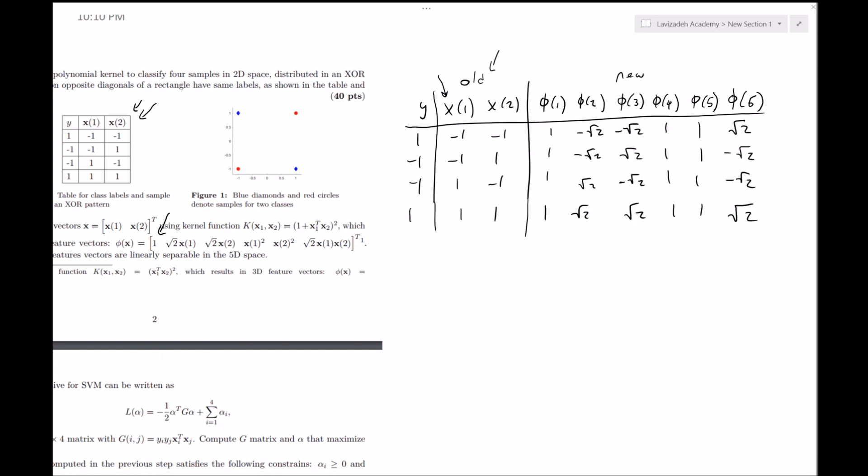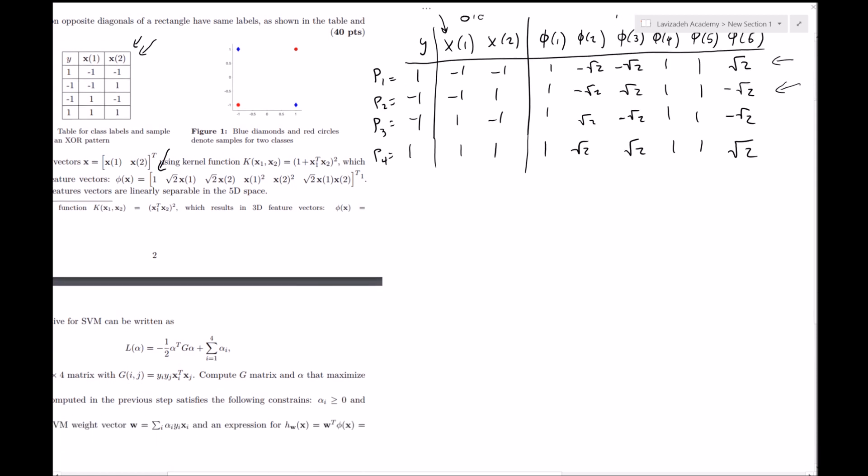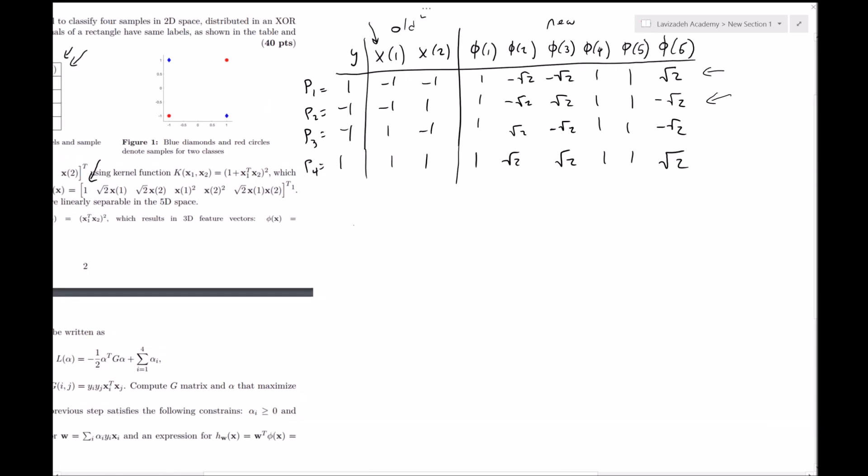All right, so here's our mapping. The question is, does that mapping work? In other words, are these new data points in our new feature space linearly separable? Let's take a look. Let's recall the definition of linear separability.